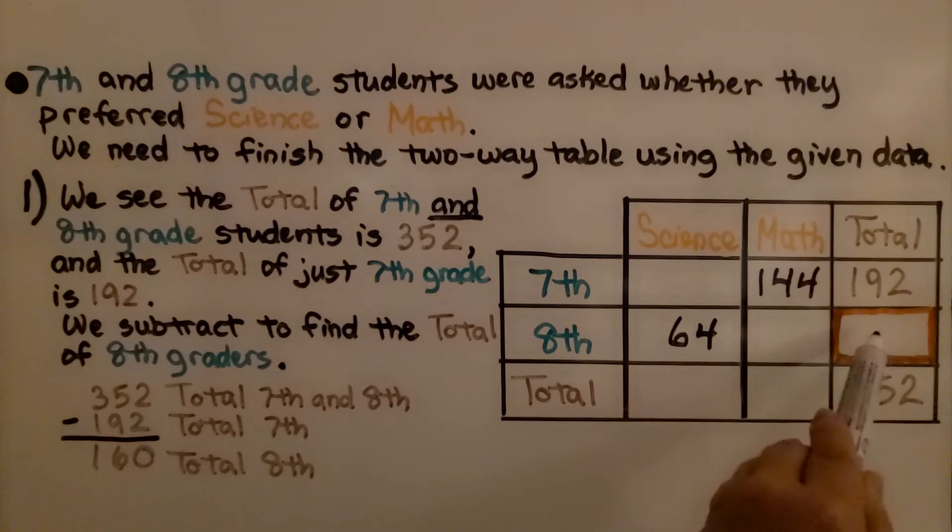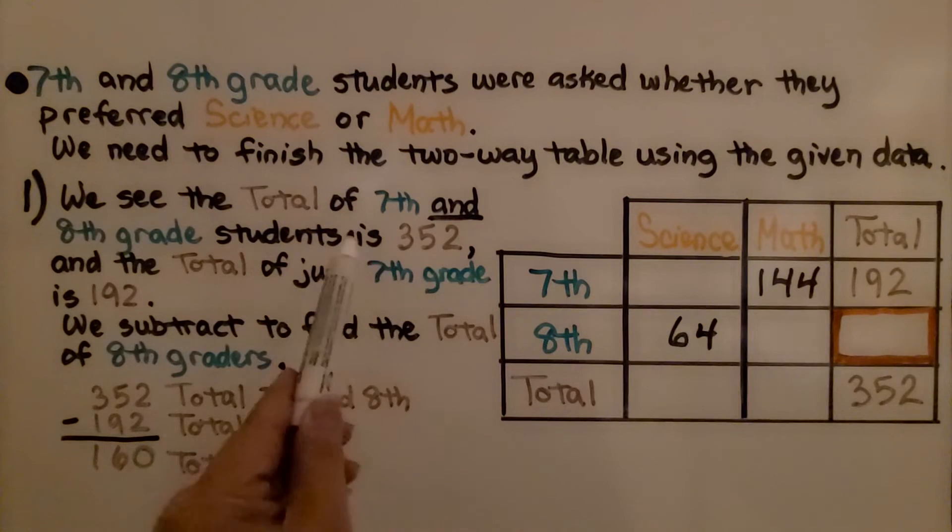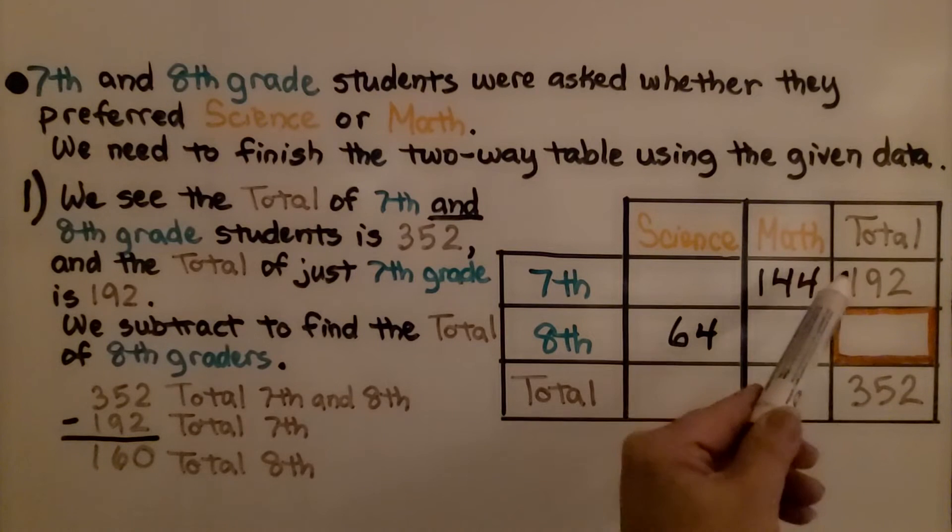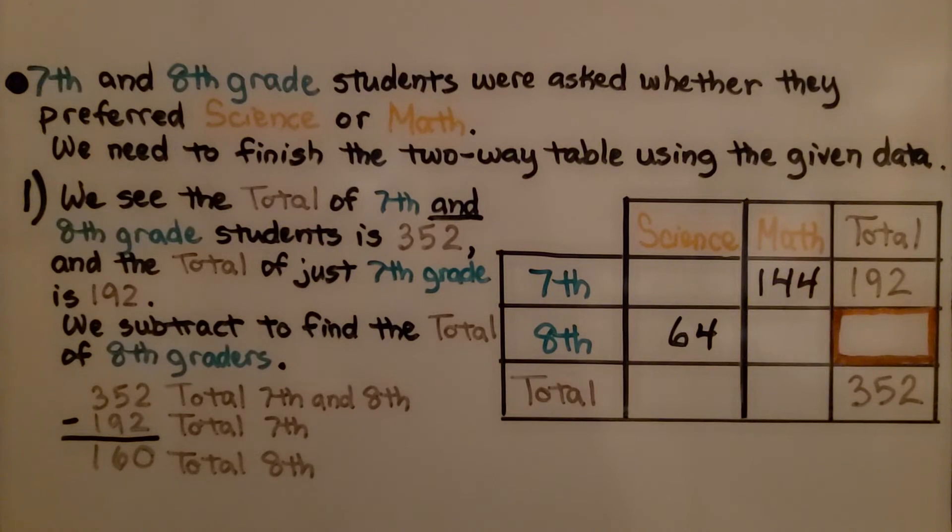So we're going to start with this cell. We see the total of 7th and 8th grade students is 352. And the total of just 7th graders is 192. We subtract to find the total of 8th graders.